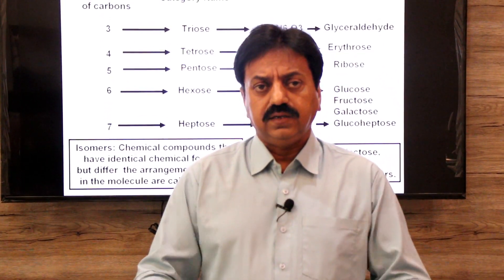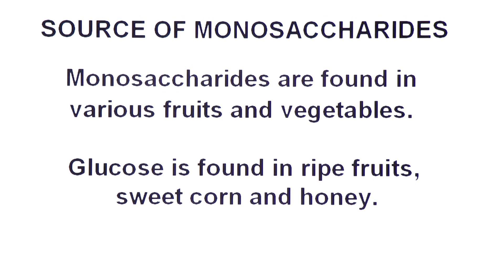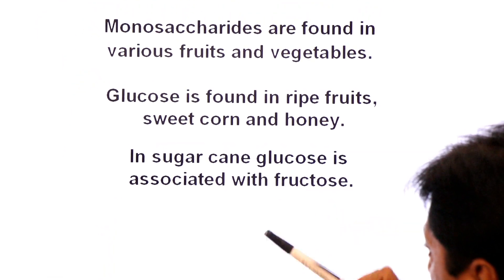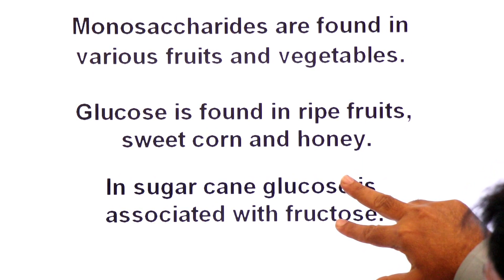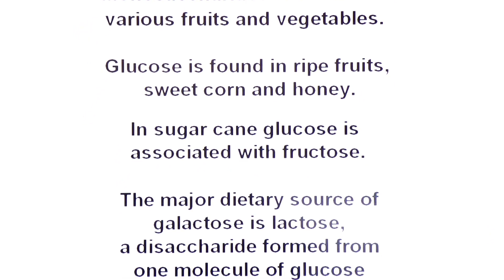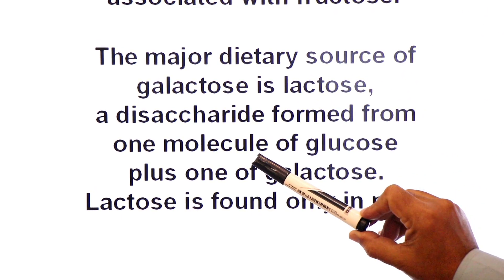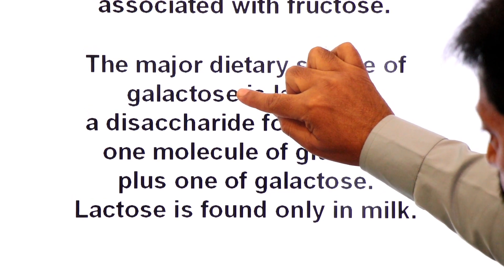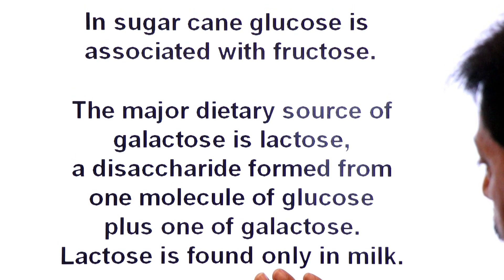Sources of monosaccharides: monosaccharides are found in various fruits and vegetables. Glucose is found in ripe fruits, sweet corn, and honey. Fructose is found in sugar cane. Galactose is found in milk, but in a combined state — glucose combines with galactose to form a disaccharide called lactose, which is also known as milk sugar.